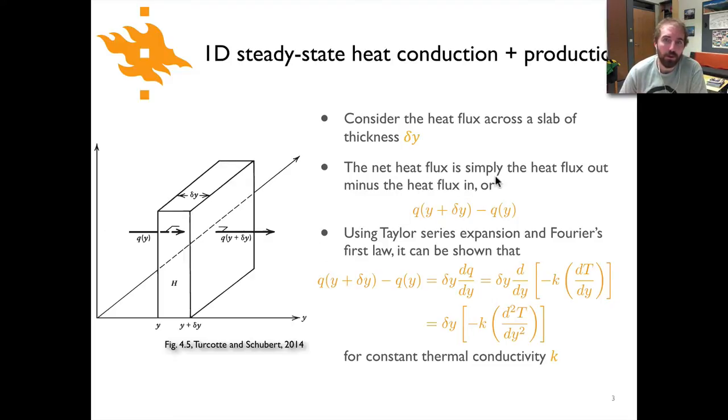The net heat flux is the heat flux out minus the heat flux in, so that would be q(y + delta y) - q(y). Using Taylor series expansion and Fourier's first law, we can see that this can be rewritten as delta y times dq/dy. And dq/dy we can take from Fourier's law because previously we had q = -k dT/dy. So we can plug that in. We have delta y times d/dy of -k times dT/dy. Taking the second derivative of temperature, we end up with delta y times -k times d²T/dy². This all works for constant thermal conductivity k.